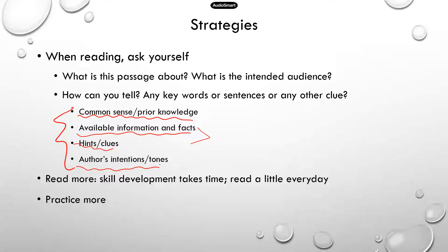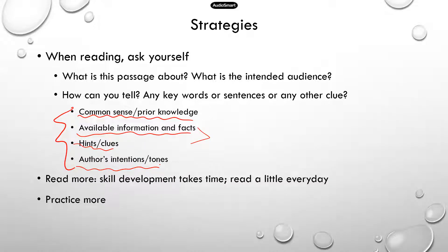Also consider the author's intentions and tone. Is the author criticizing something, always negative about something? For example, if the author is critical of an economic incentive policy, and there's a question about what conclusions you can draw, then the answer is probably along the lines that the author does not think this policy is a good idea. Once you identify the author's intentions, that will definitely help you draw conclusions.